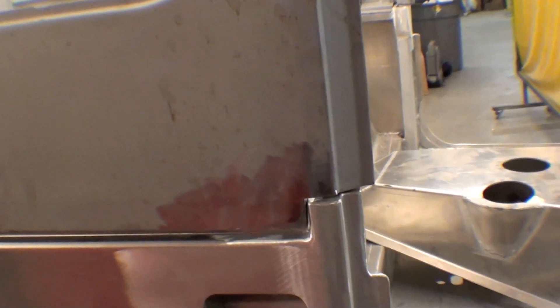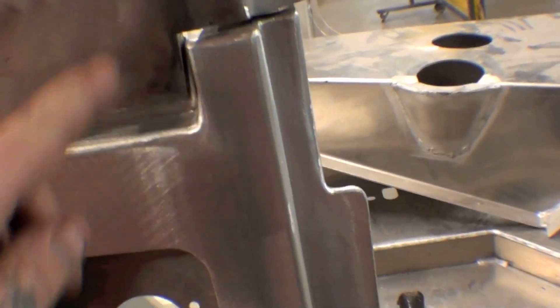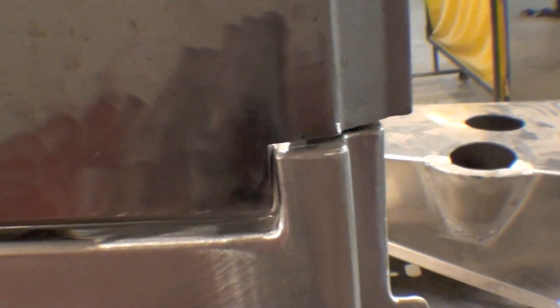Here we are with our hardtop sides, they're getting ready to go outside for their final sandblast where they can put an epoxy primer. As you can see on here we had to do a little work. They all need a little adjustment to get them to fit just right on these aluminum bodies using the factory steel hardtop.